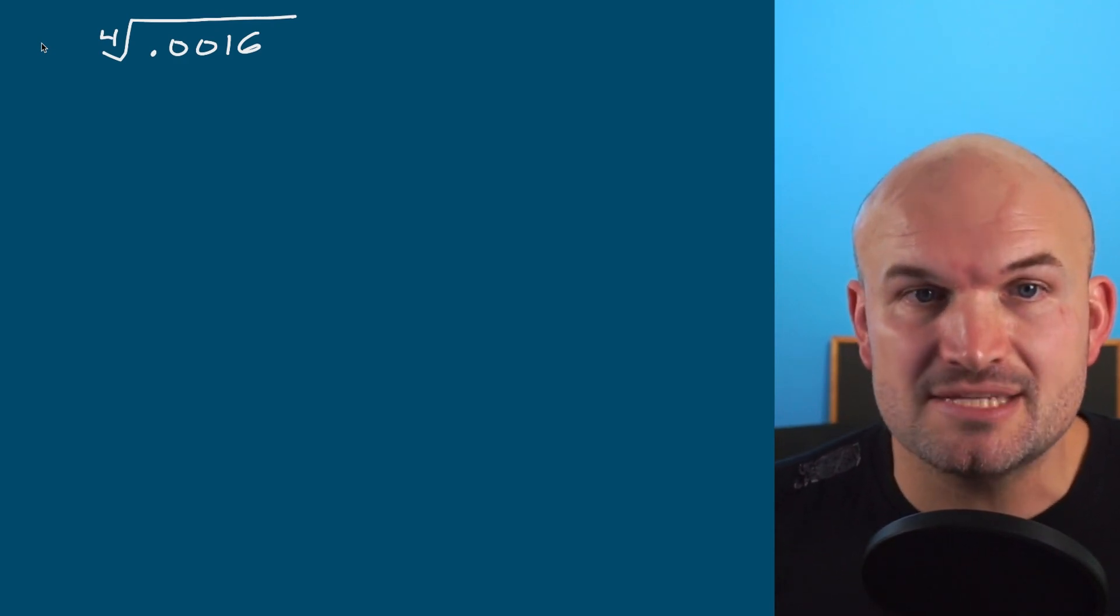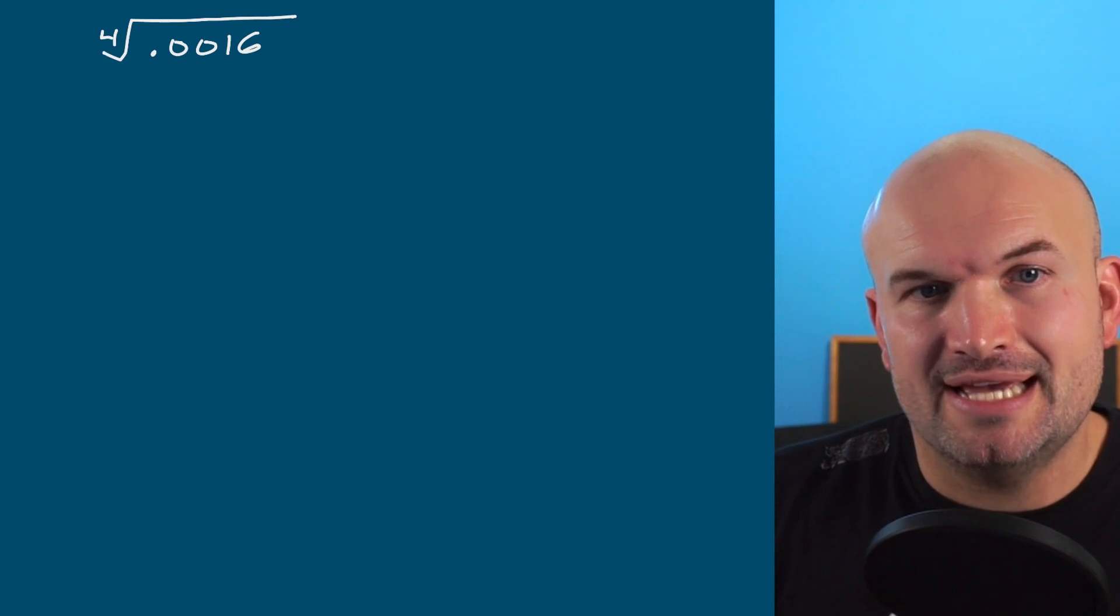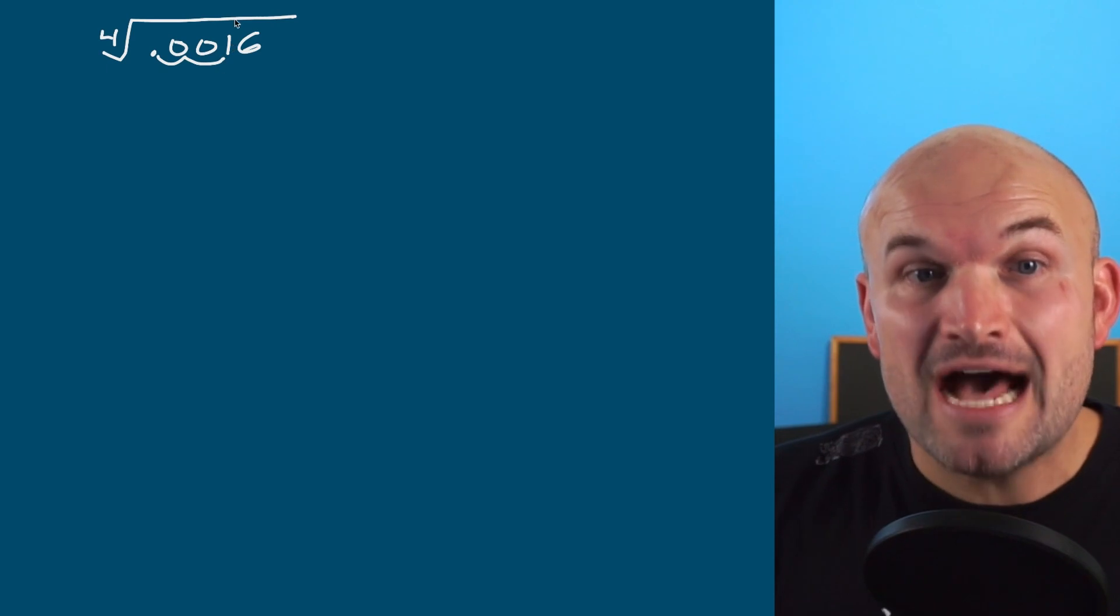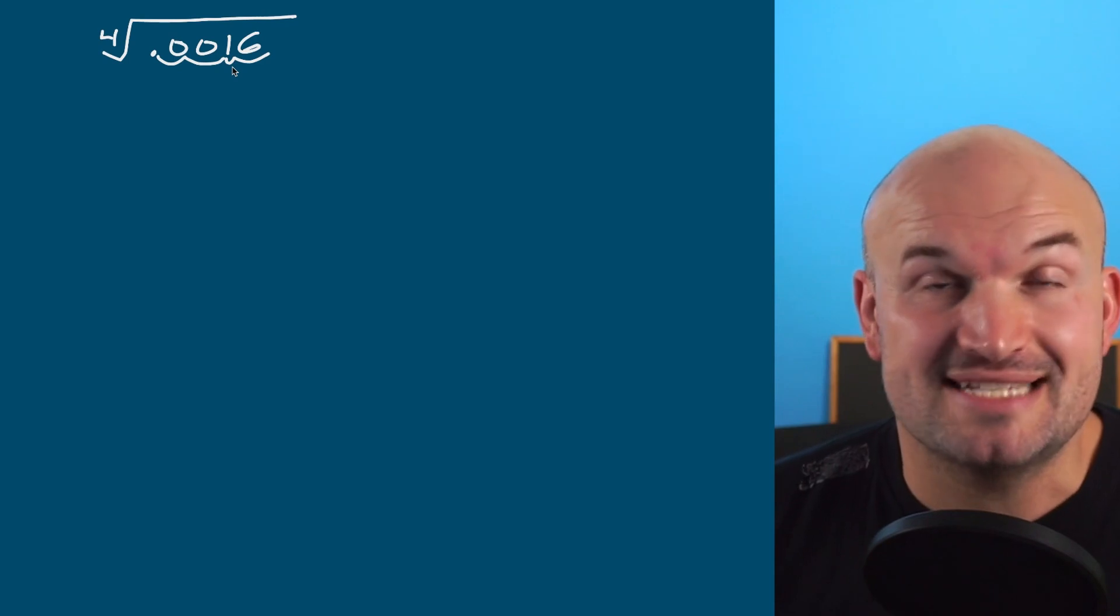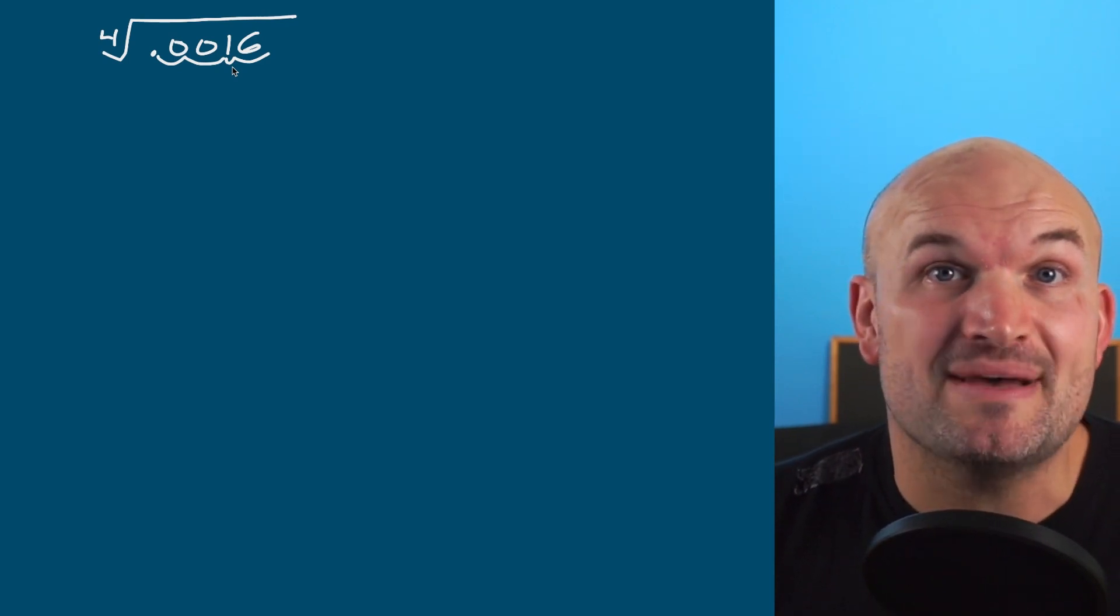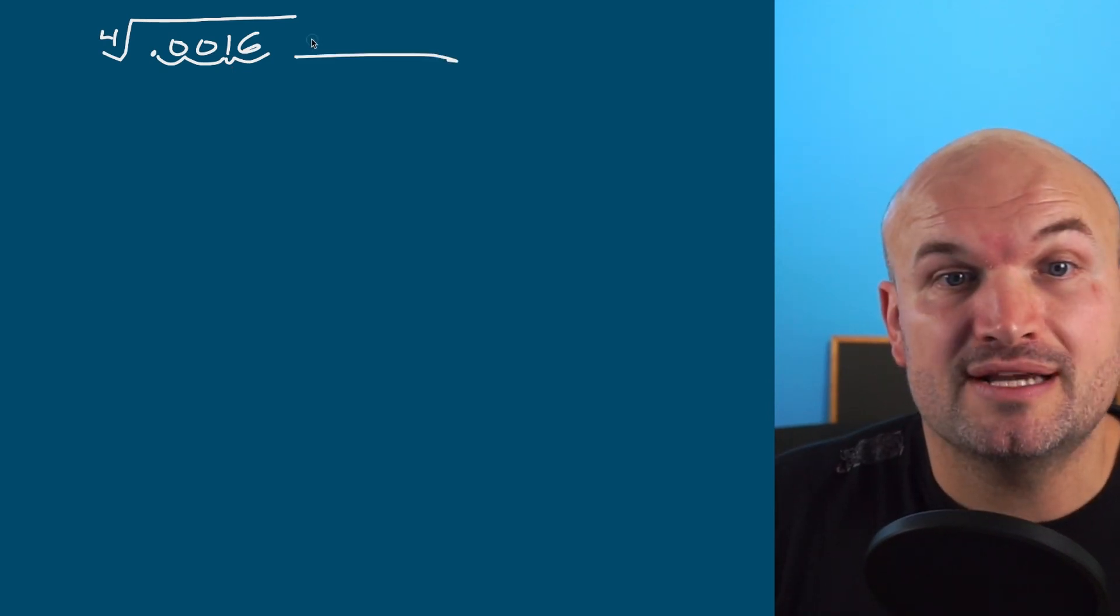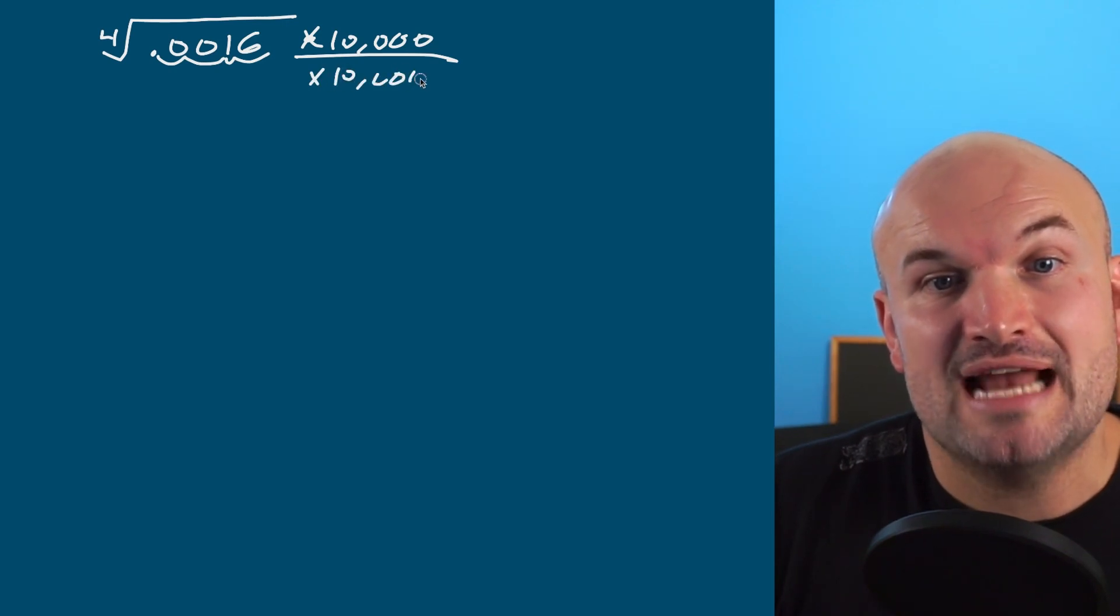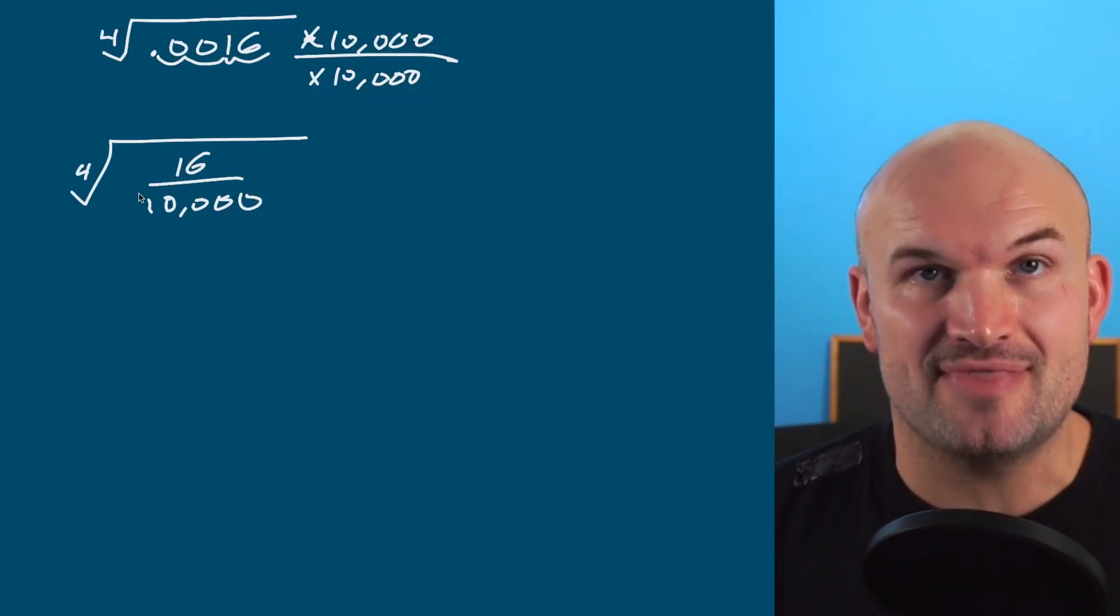Now, sometimes rewriting a decimal as a fraction can kind of be a little difficult. But one thing I recognize here is if I multiply this by 100, that's going to move my decimal spot over two units. So if I multiply it by 10,000, then I'm going to move it over four more units. I just can't randomly multiply a number by 10,000. But as long as I multiply the top and the bottom by 10,000, then I'm keeping what we call an equivalent expression. So what I'm going to do here is I'm going to multiply by 10,000 in the numerator and I'm going to multiply by 10,000 in the denominator. Now that's going to give me a 16 over 10,000.